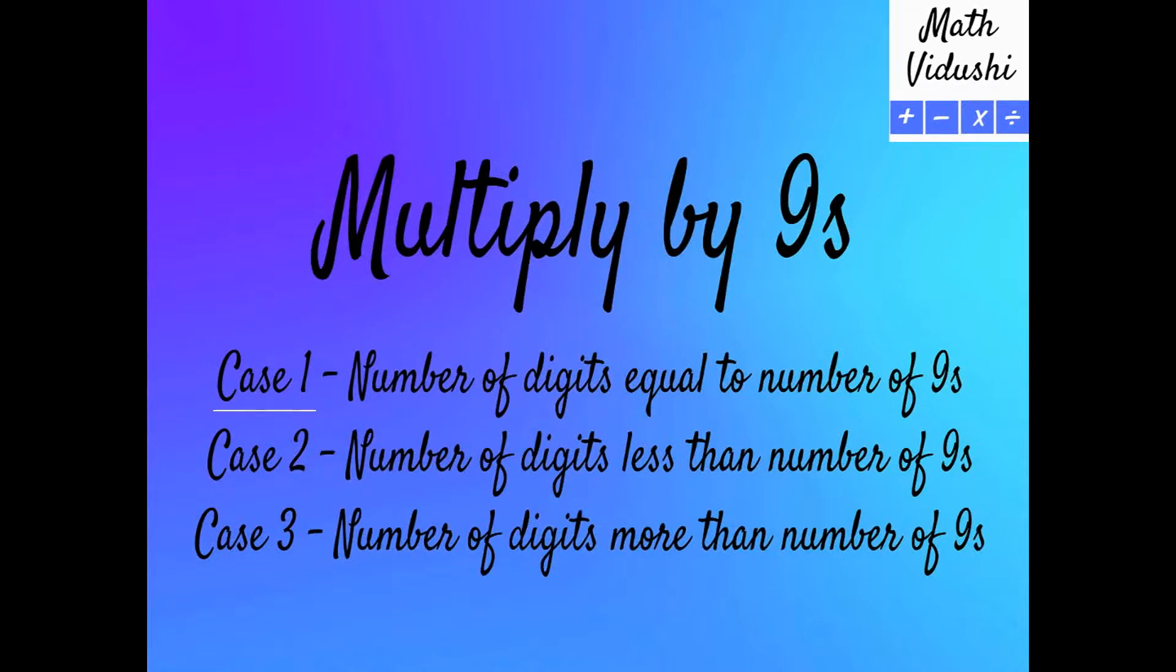There are three possibilities with the multiplicand. Case number one is when the number of digits is equal to the number of 9's, which is what we will be looking at in this video. We will be looking at the other cases in the other videos.